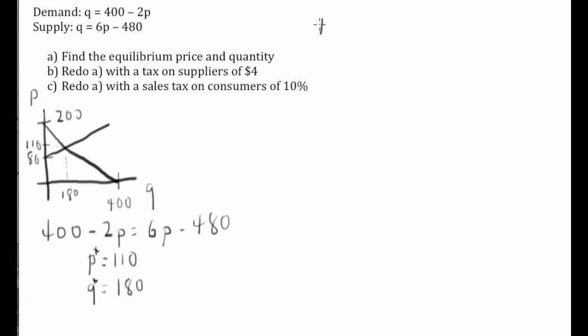Let's change this and assume that we've got a tax on suppliers. That means we want to change the supply equation. We want to account for the fact that suppliers are getting $4 less because it's going to a taxing agency. So that means our quantity is 6 times (P minus 4) minus 480. Or if we rewrite that, that is 6P minus 504.